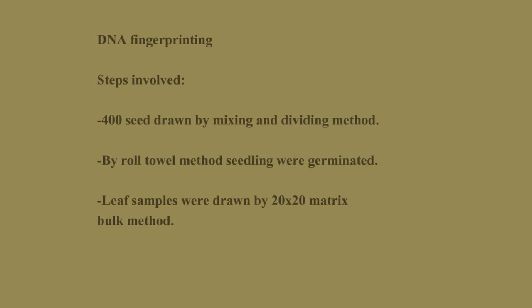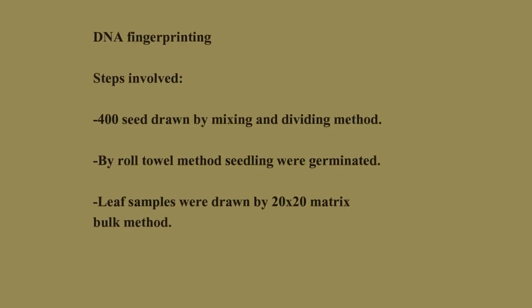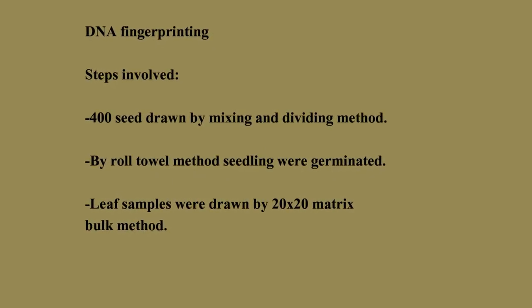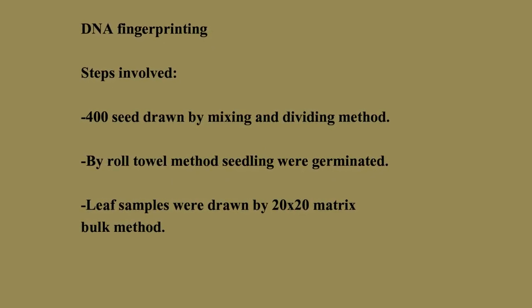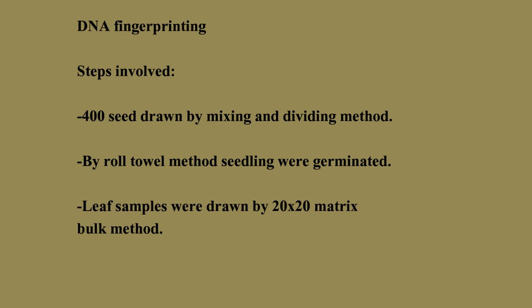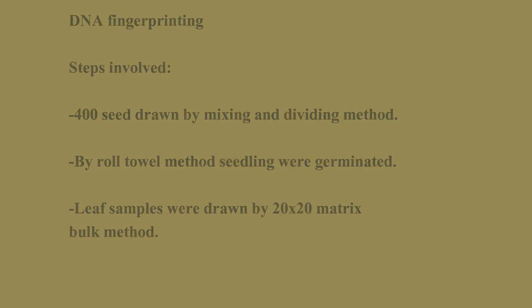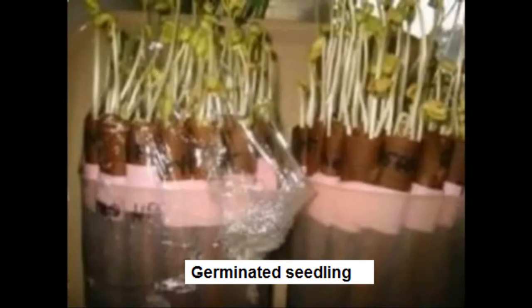DNA fingerprinting — steps involved. Seeds are drawn by mixing and dividing methods. By roll table method, seedlings are germinated. Leaf samples are drawn by a 20×20 matrix bulk method.